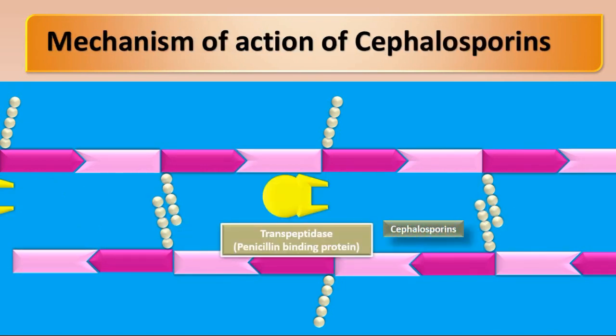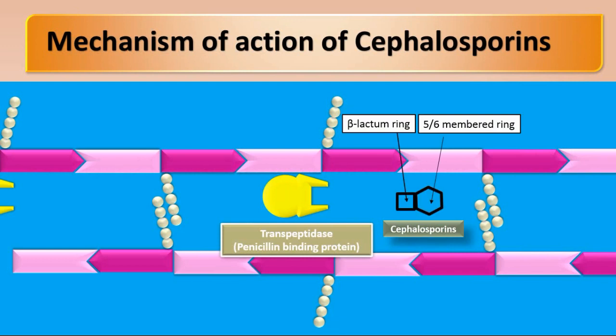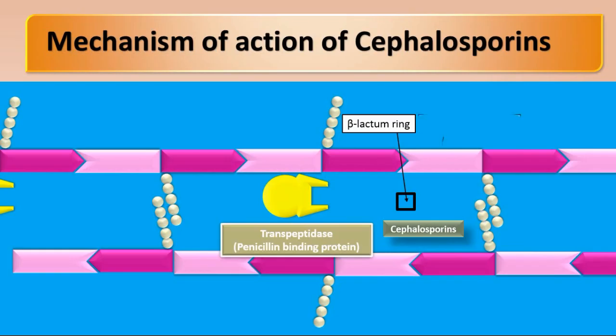Cephalosporins have two rings in their structure: a four-membered ring which is called the beta-lactam ring, and a five or six-membered ring. The beta-lactam ring has affinity to bind with the bacterial transpeptidase enzyme.